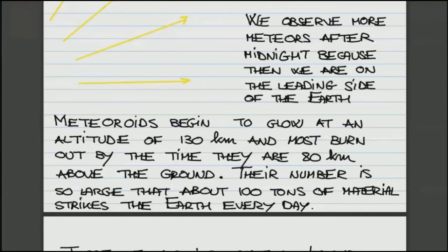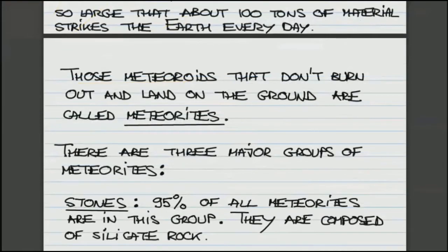Those more massive meteoroids that don't burn out will land on the ground. And once they are on the ground, we call them meteorites. So it goes from meteoroid before it starts burning to meteor when it burns. If it survives the trip through the atmosphere and falls on the ground, it is called meteorite.